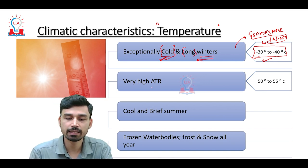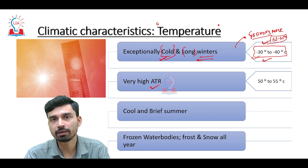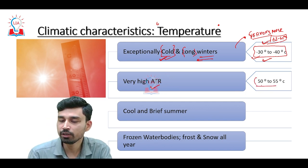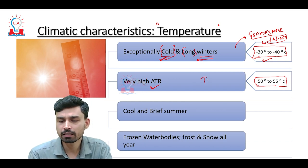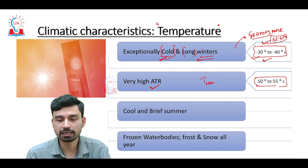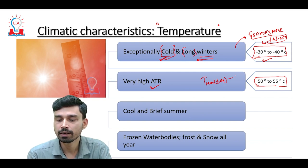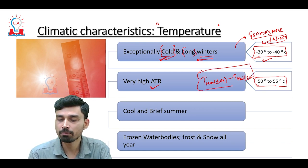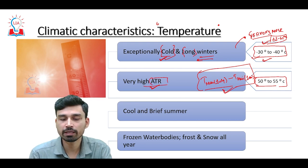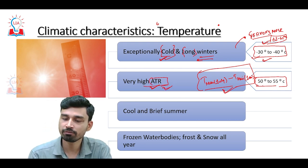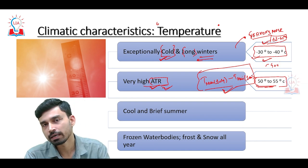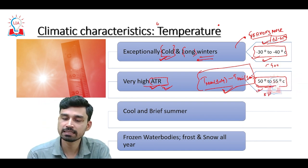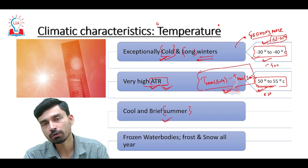Due to such low winter temperatures, the annual range of temperature in this climatic zone is very high — somewhere between 50 to 55 degrees Celsius. The annual range of temperature is calculated as the maximum temperature recorded during the summer season (typically July) minus the minimum temperature recorded in the winter month (typically January). In summer, temperatures can rise to 5, 6, or 10 degrees Celsius, increasing the annual temperature range significantly.